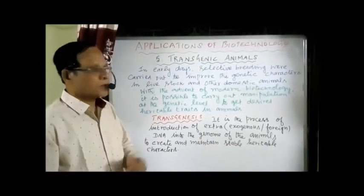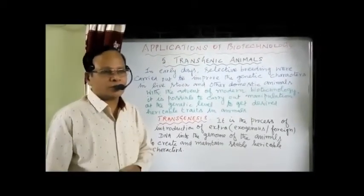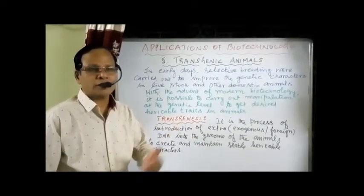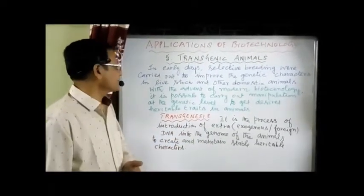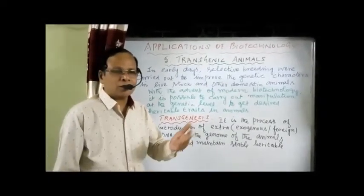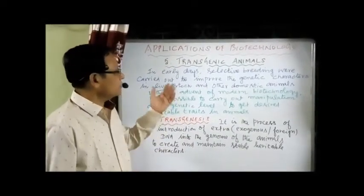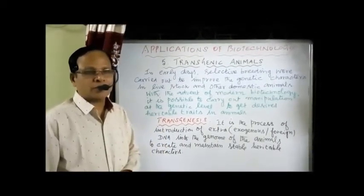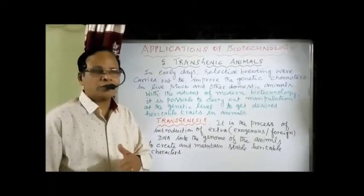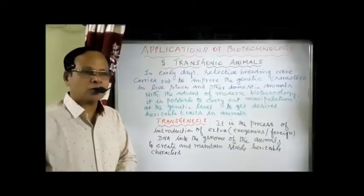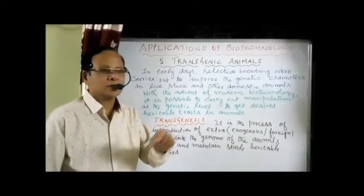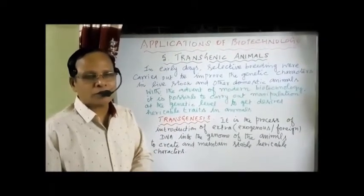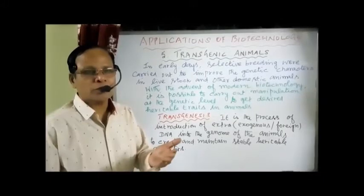Animals are one of the applications of biotechnology — they are being produced through biotechnology and recombinant DNA technology. In the past, in early days, selective breeding was carried out to improve the genetic characteristics of animals, particularly the livestock. The livestock includes cattle, sheep, pig, etc.